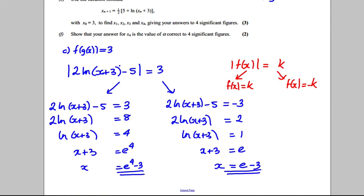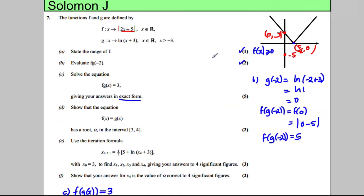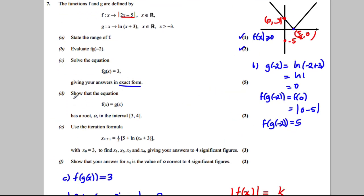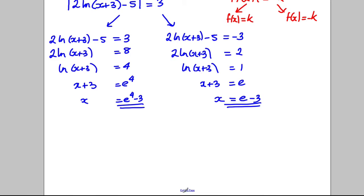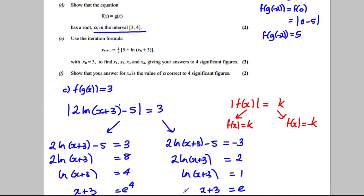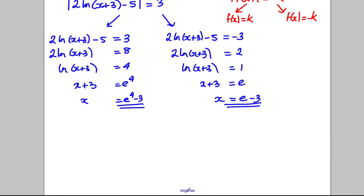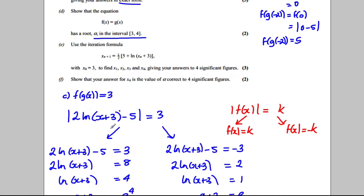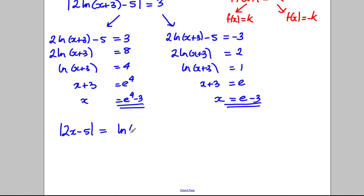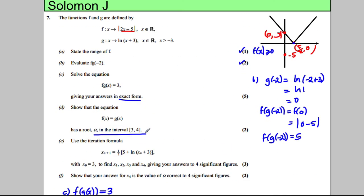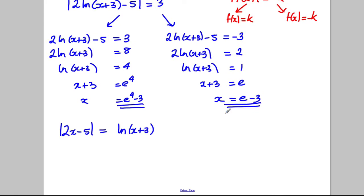We've got our exact answers for F(G(x)) = 3 — we did not decimalise. Now part D: show that F(x) = G(x) has a root in the interval [3, 4]. So we're solving the modulus of (2x − 5) equals the natural logarithm of (x + 3), and we want to show it has a root between 3 and 4.